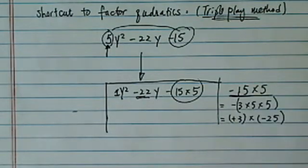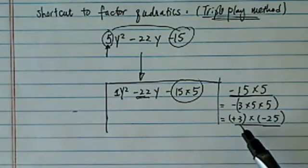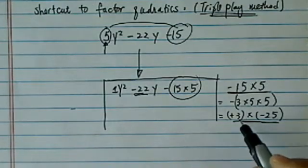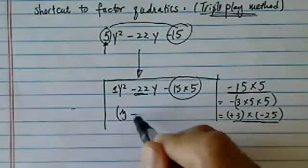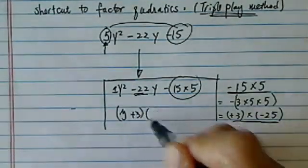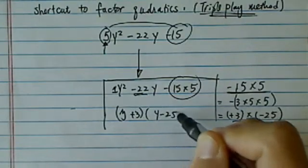Now this is still minus 75, and so is this one. And by using this method, I have my two numbers that I'm looking for. So I have y plus 3 here, and y minus 25.